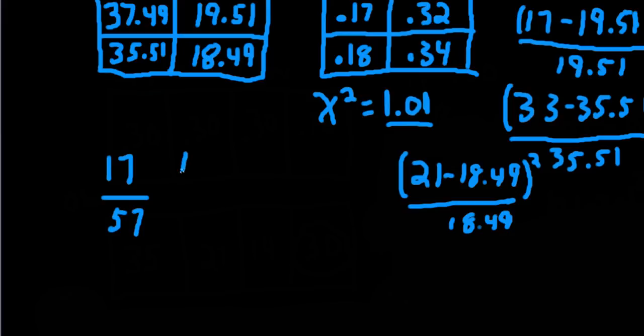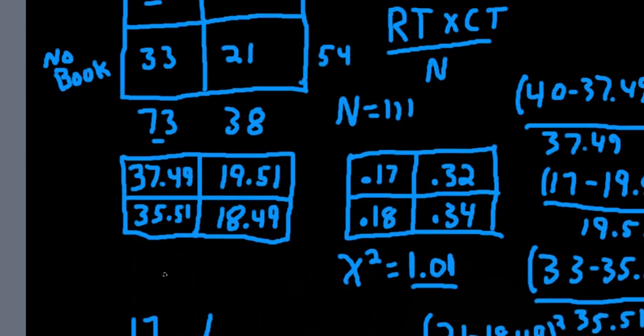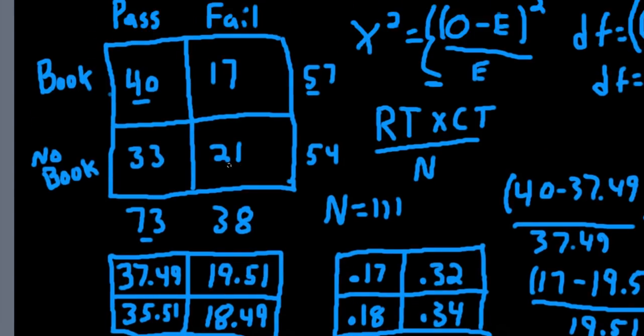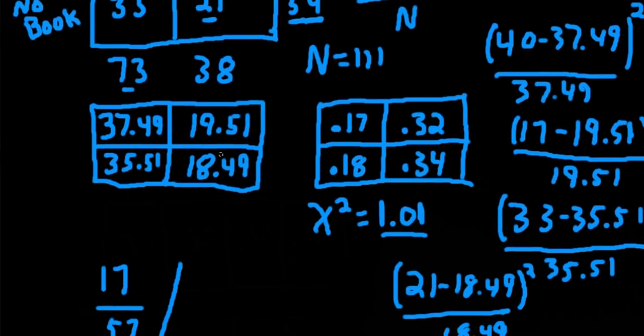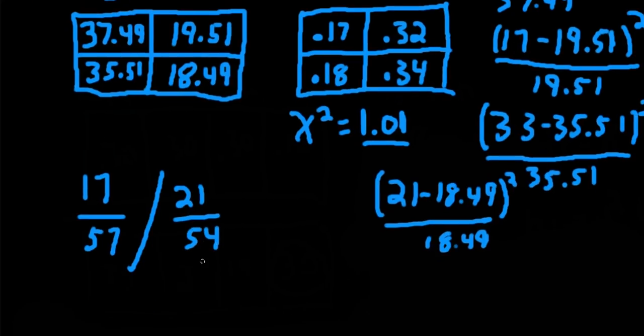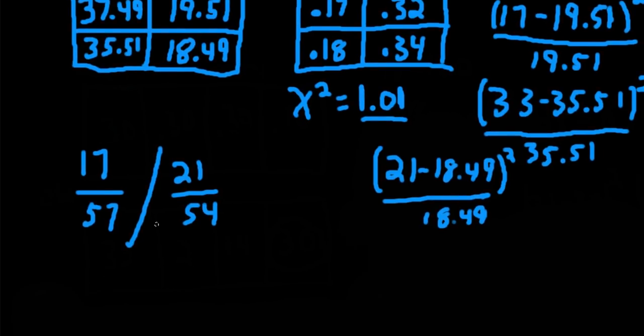Now, of those who don't have the book, 21 out of 54 failed. Of the people who don't have the book, 21 out of 54 failed. So we could compute the relative risk by dividing the probabilities into each other.